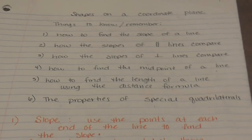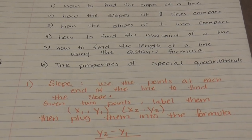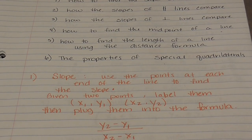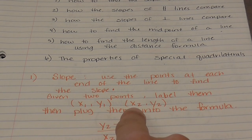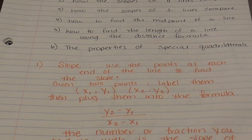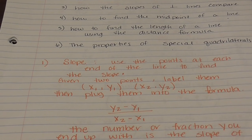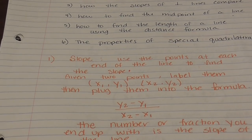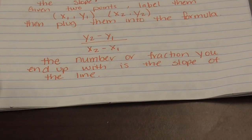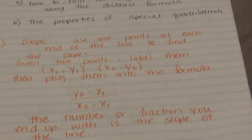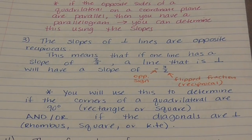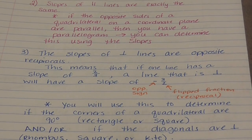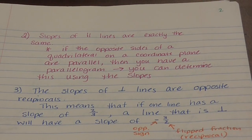For the slope, you use the points at each end of the line. Given any two points, you label them x1, y1 and x2, y2, then plug them into the slope formula: y2 minus y1 over x2 minus x1. The number or fraction you end up with is the slope of the line, which you can use to compare and see if lines are parallel or perpendicular.